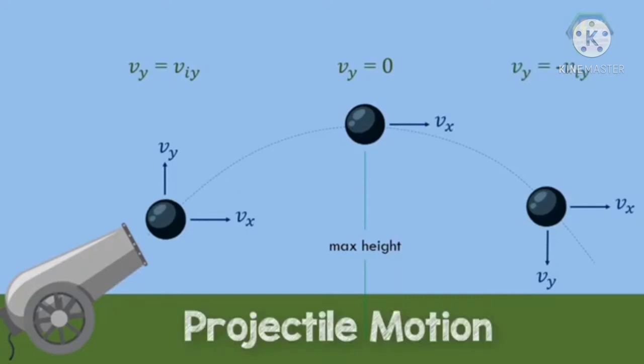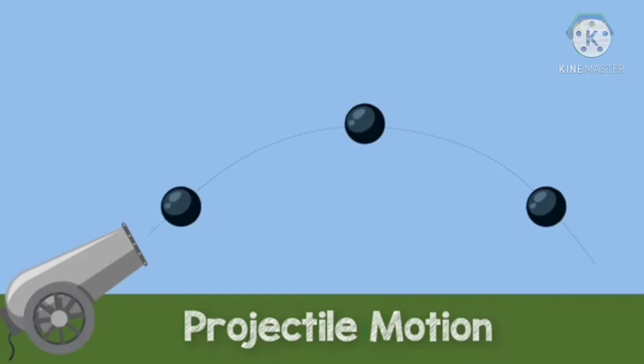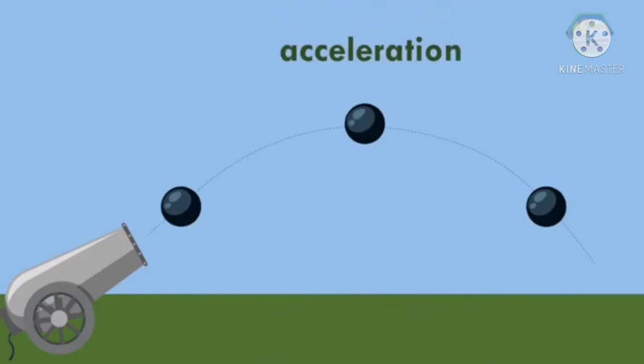Now, let us look at the acceleration. The acceleration due to gravity, which equals 9.8 meters per second squared. This acceleration is pointing downward, and it's constant during the cannonball flight.